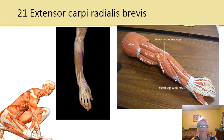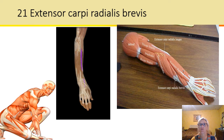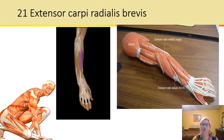How many coffee drinkers are out there? Have you ever ordered a brevé? Longus is the long one and brevis basically means short. So extensor carpi radialis brevis: extensor causes extension, carpi means of the wrist, radialis near the radius, and brevis means it's the shorter one. So this is the short wrist stretcher of the radius — extends the wrist and abducts the hand.